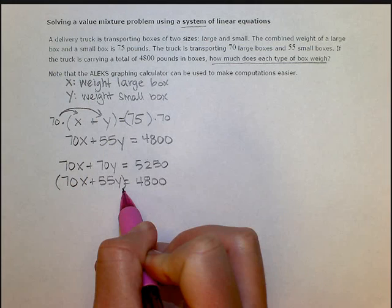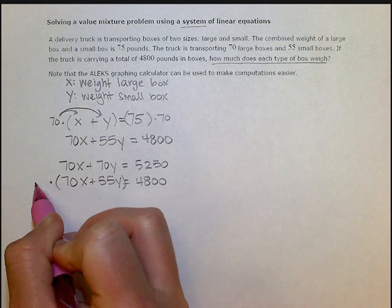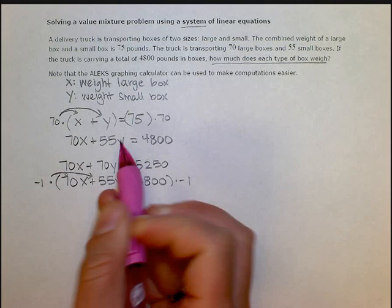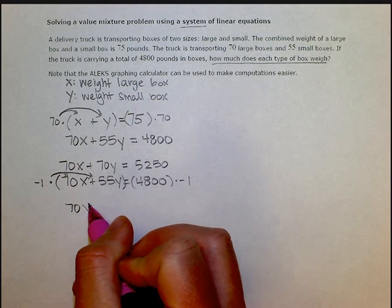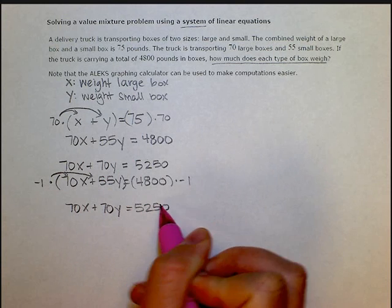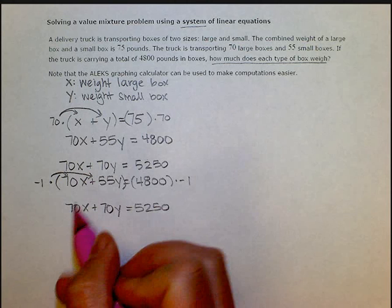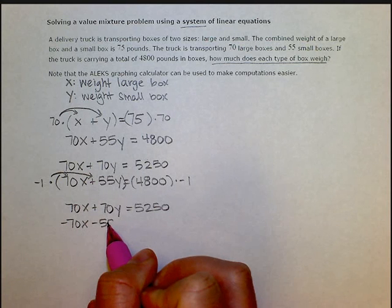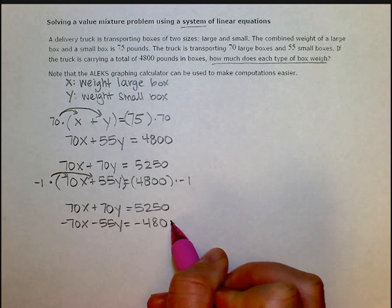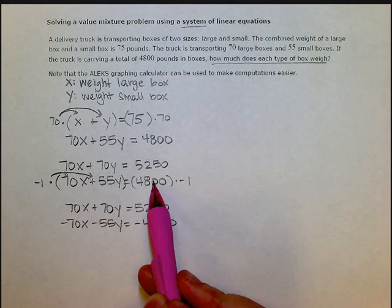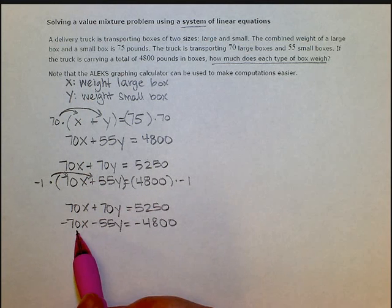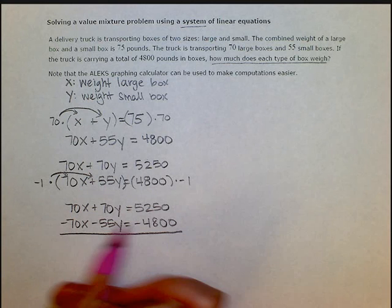In order to do that, I'm going to multiply both sides of the equation by a negative one. And we'll distribute again. So my first equation I haven't changed, so I'm just going to rewrite it. And my second equation is now negative 70x minus 55y equals negative 4,800. Make sure that every term is being multiplied by that negative. Now my x values are ready to cancel, so I'm going to add my equations together.